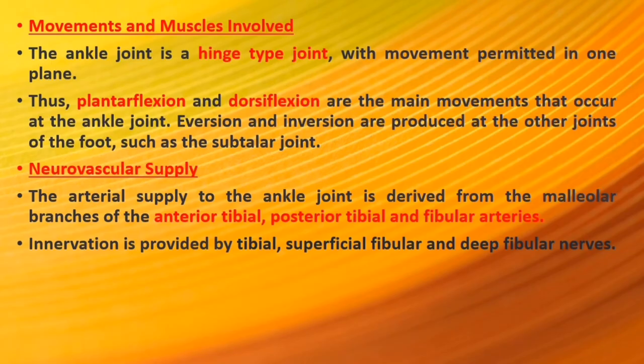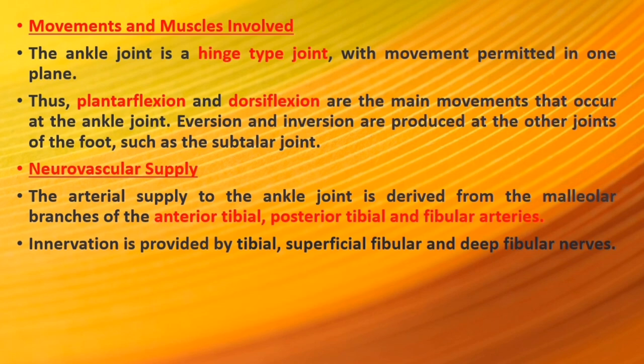Movements and muscles. The ankle joint is a hinge-type joint with movement in one plane. Plantarflexion and dorsiflexion are the main movements; eversion and inversion are produced at other joints of the foot such as the subtalar joint. Plantarflexion is produced by muscles in the posterior compartment: gastrocnemius, soleus, plantaris and posterior tibialis. Dorsiflexion is produced by muscles in the anterior compartment: tibialis anterior, extensor hallucis longus and extensor digitorum longus. Arterial supply is derived from the malleolar branches of the anterior tibial, posterior tibial and fibular arteries. Innervation is provided by the tibial, superficial fibular and deep fibular nerves.